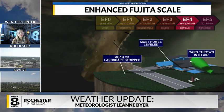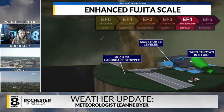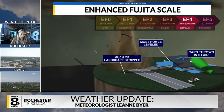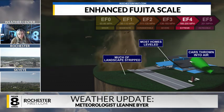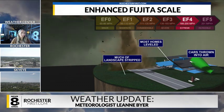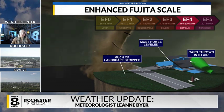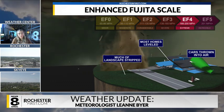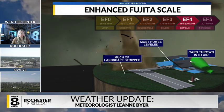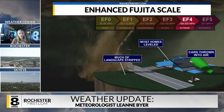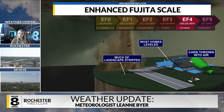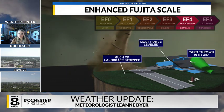Heading now to EF4 tornadoes, where wind speeds are between 166 and 200 miles an hour. You hear about most EF3 and EF4 tornadoes primarily in the Great Plains as well as the Midwest, and even in the southeast near Alabama and Mississippi. These are frightening, but people there are a little more accustomed to these violent storms.